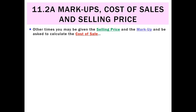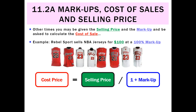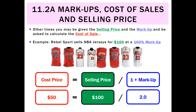What if we're given the selling price and the markup but don't know the cost of sale? For example, Rebel Sports sells NBA jerseys for $100 at a 100% markup. We use: cost price equals selling price divided by (1 plus markup). So we do $100 divided by (1 plus 1.0), which is $100 divided by 2.0. These jerseys cost our business $50.